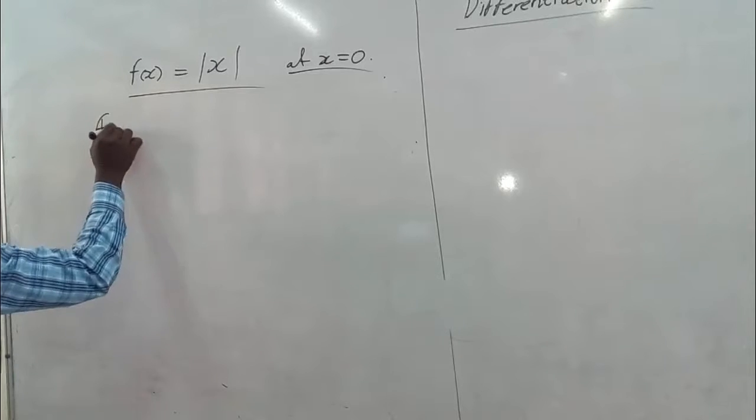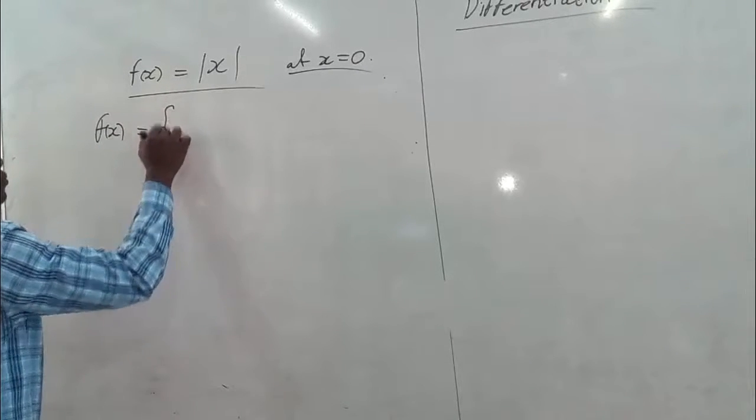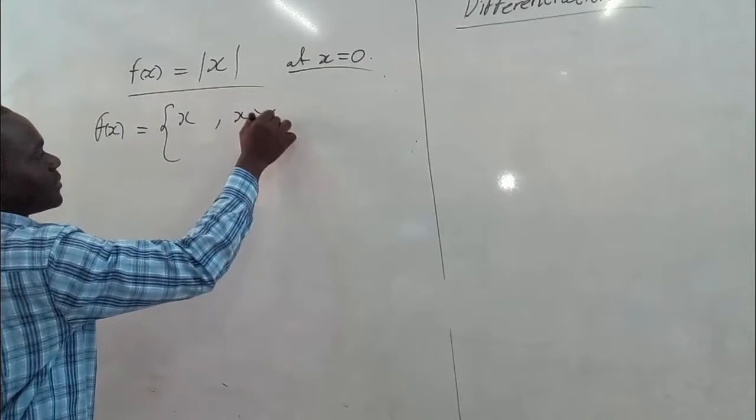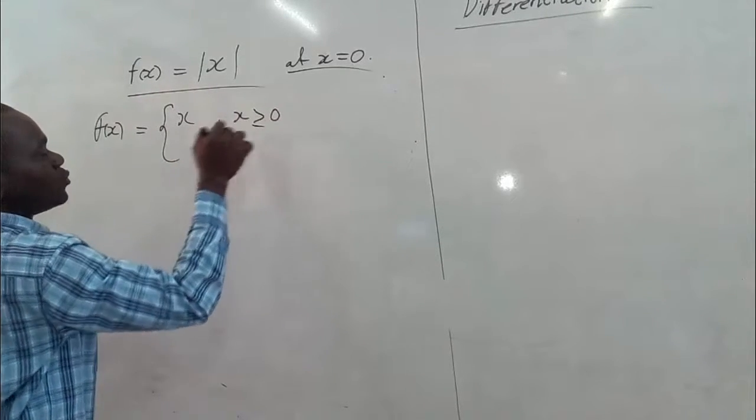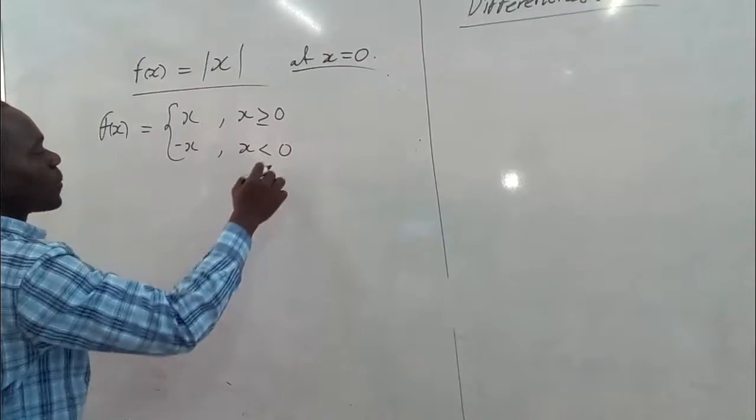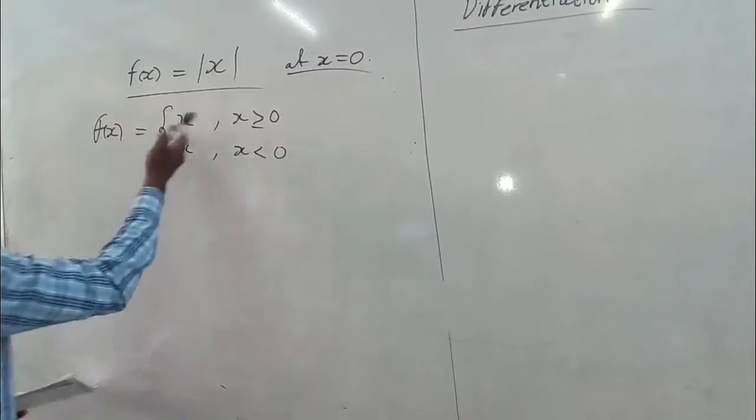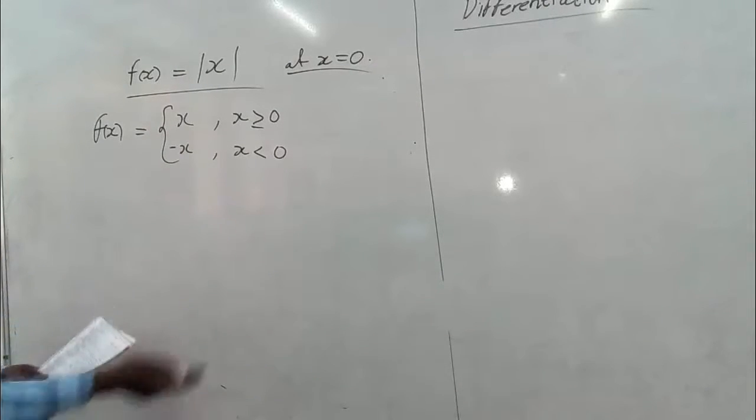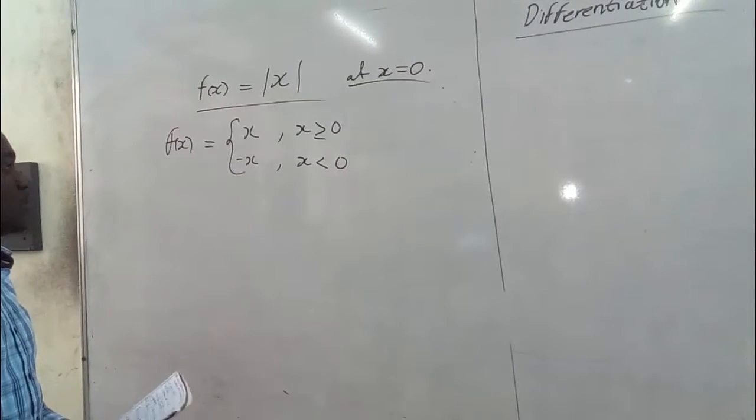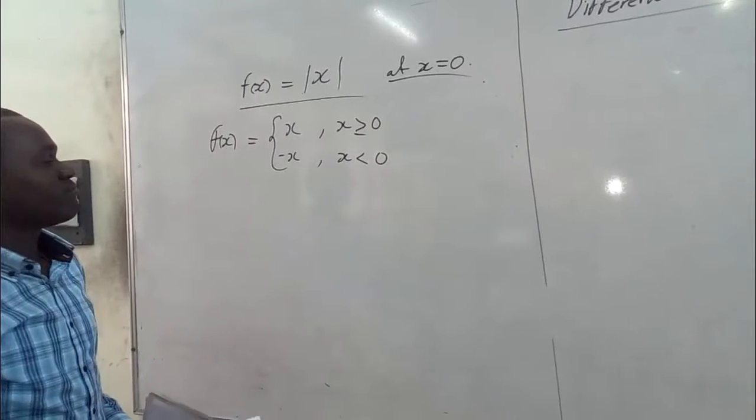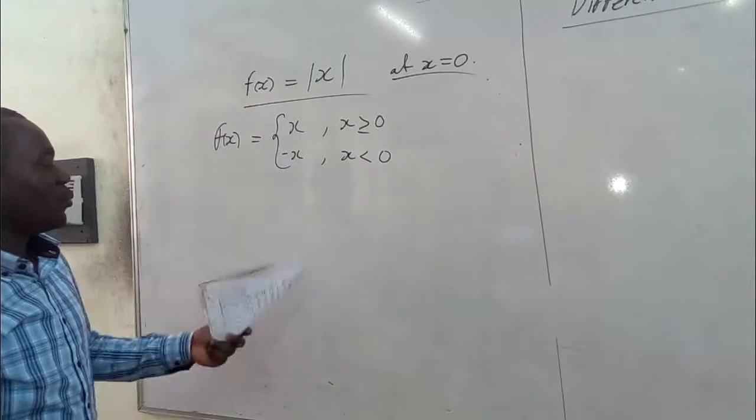We can write f(x) equals x if x is greater than or equal to 0, and negative x if x is less than 0. If the number is positive, we leave it as it is. When it's negative, we negate it to make it positive. Absolute value functions always give positive values. With this, and with what we did in our earlier tutorials, we proceed.